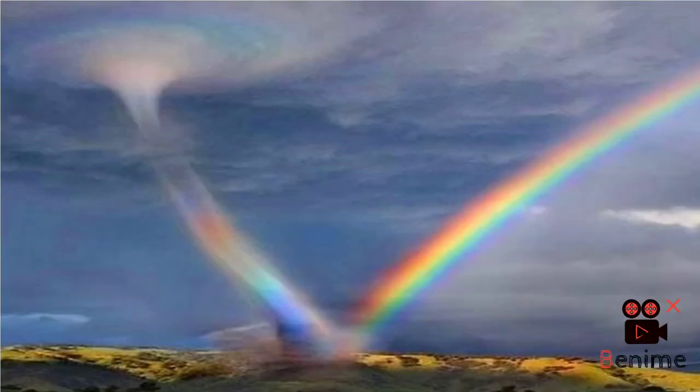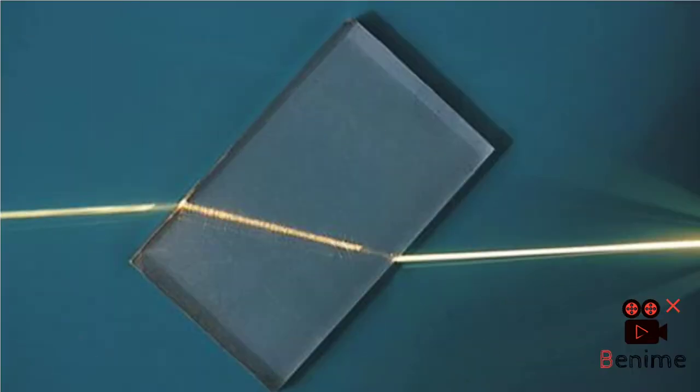Surely you have seen a rainbow. Maybe you are chasing tornadoes and happened upon one. But did you ever notice that the sky is darker above a rainbow than below? I never did until someone pointed it out. We are going to find out why this is.